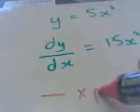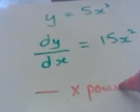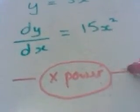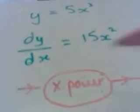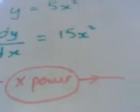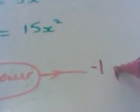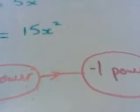And then we subtracted 1 from the power. That's our basic differentiation. So if we were to work backwards to our starting point we would add 1 to the power.